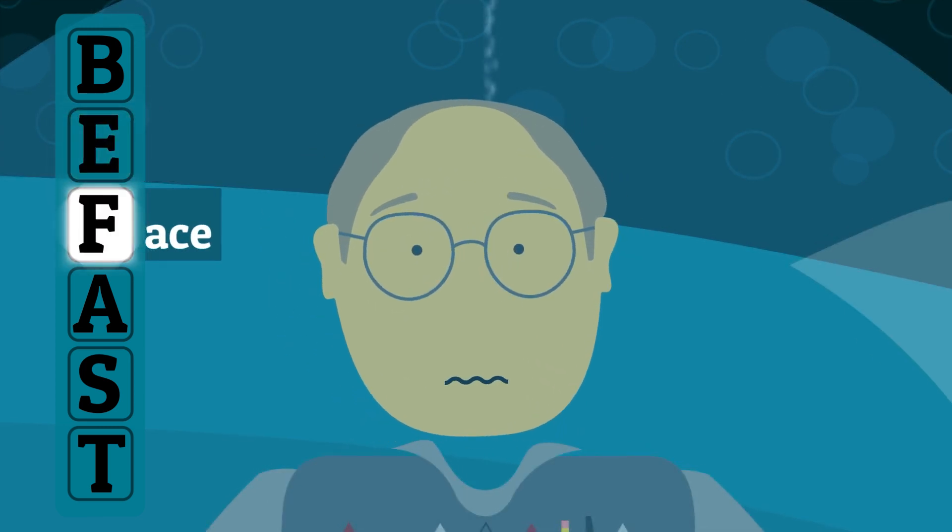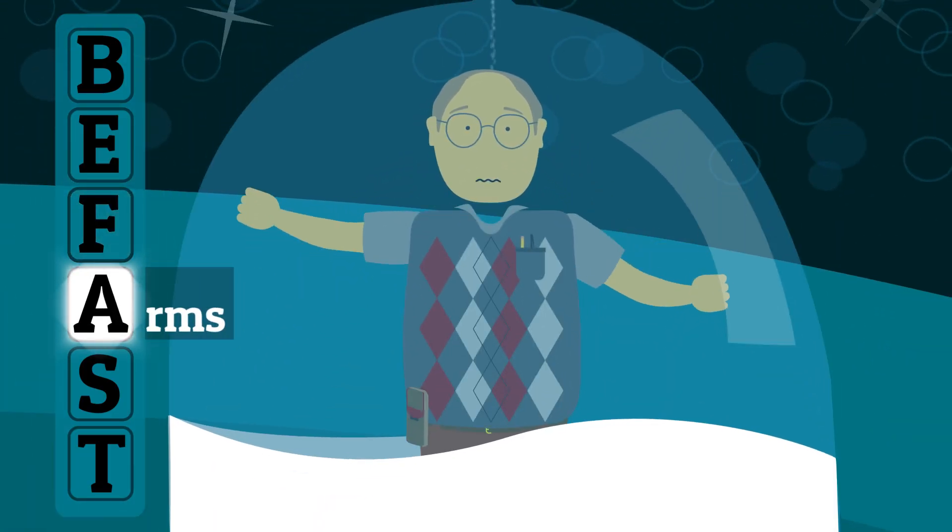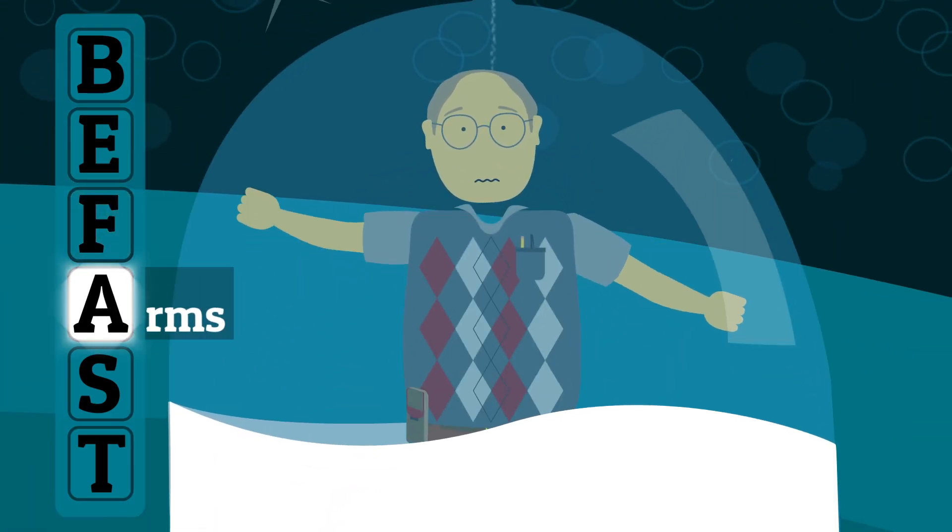F equals face. Does the person's face look uneven? A for arm. Does one arm drift down? Ask the person to raise both arms.